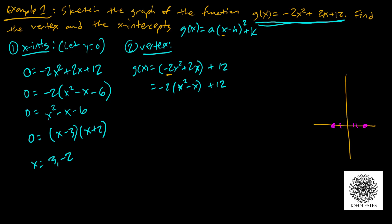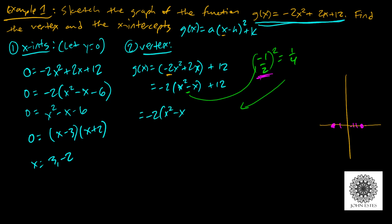We add and subtract ¼ inside the parentheses: g(x) = −2(x² − x + ¼ − ¼) + 12. Adding and subtracting ¼ doesn't change the equation since it nets to zero. Now x² − x + ¼ factors as a perfect square (x − ½)². To pull the −¼ out of the parentheses (which are being multiplied by −2), multiply: −2 × (−¼) = +½. So g(x) = −2(x − ½)² + ½ + 12.